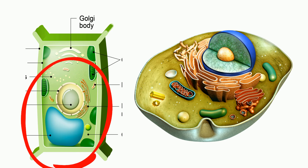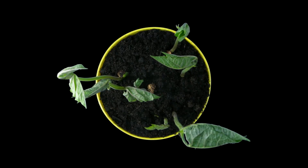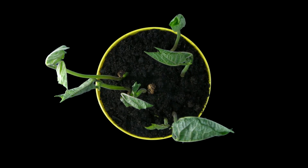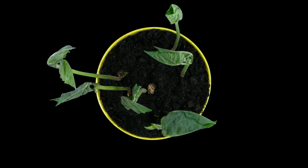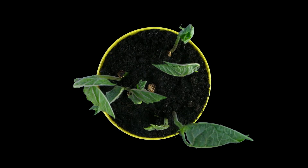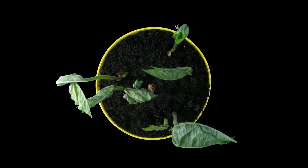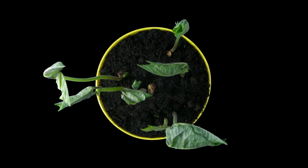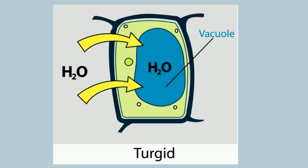Watch in this video when the vacuole is filling up with water. The vacuole regulates the turgor pressure, which is the force within the cell that pushes the plasma membrane against the cell wall.